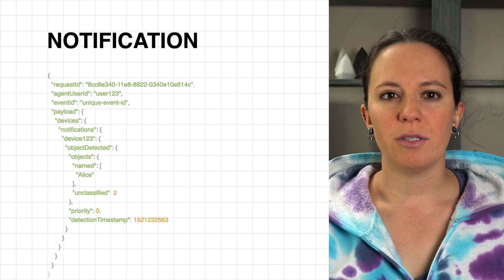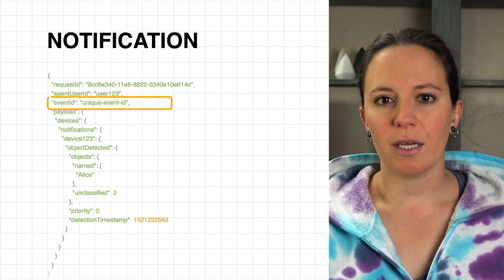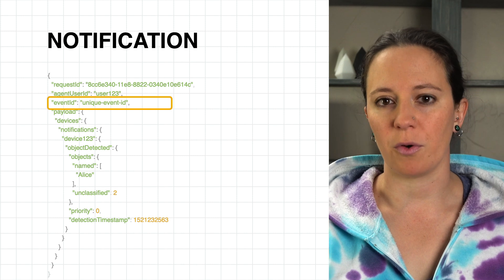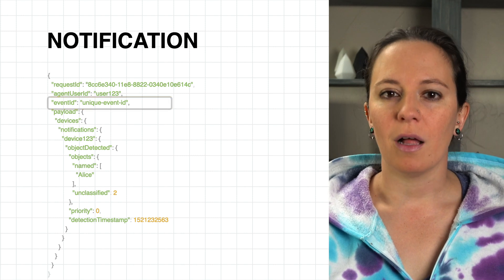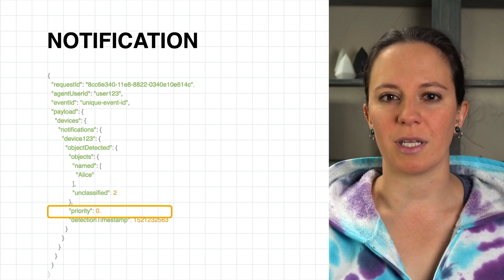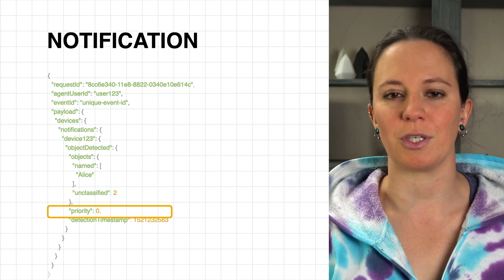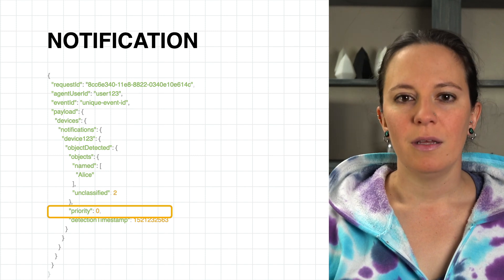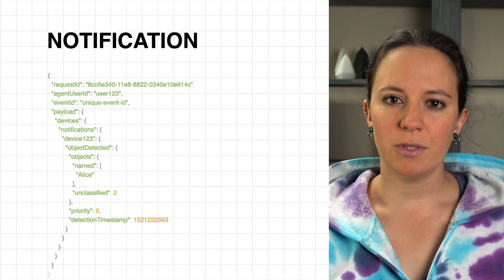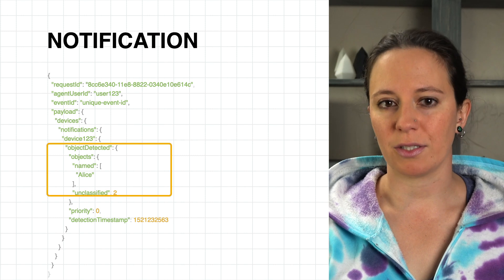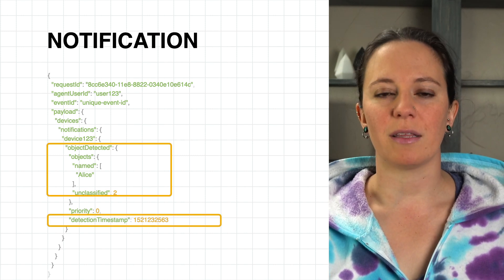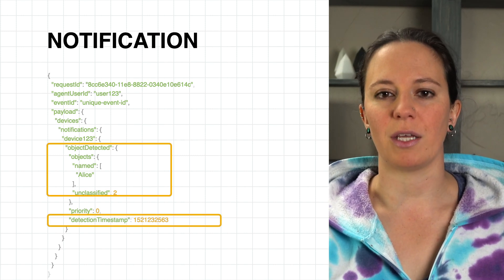This request must contain a unique ID generated by your platform for the event triggering the notification, along with the priority of the notification, which defines how to present the notification to users. Additional fields depend on the device trait and can include details like status code, the notification type, or the device ID that triggered the notification.